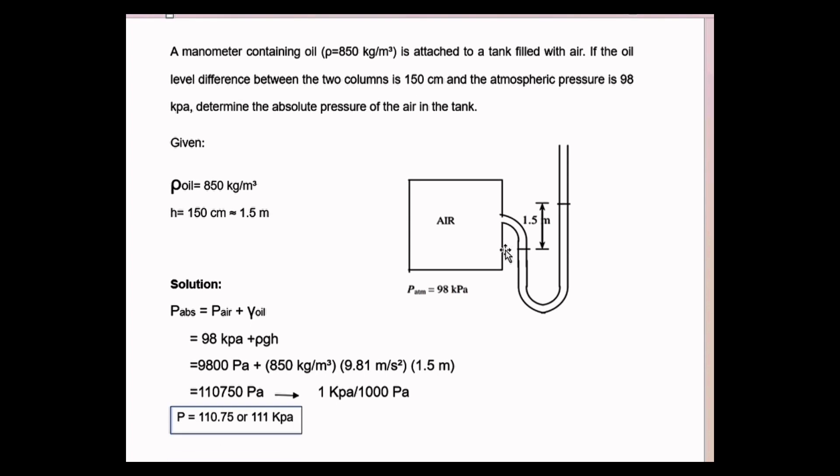Essential Chapter 2: Principles of Hydrostatics. In this problem, a manometer containing oil having a density of 850 kg/m³ is attached to a tank filled with air. The oil level difference between the two columns is 150 cm and atmospheric pressure is 98 kPa. Determine the absolute pressure of the air in the tank.